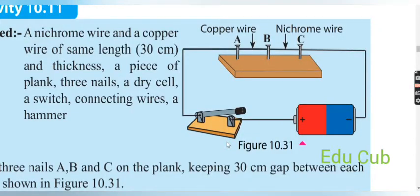That's the second activity to observe the heating effect of electric current. Here you will need a nichrome wire and a copper wire of the same length and thickness, a piece of plank, three nails, a dry cell, a switch, connecting wires, and a hammer.